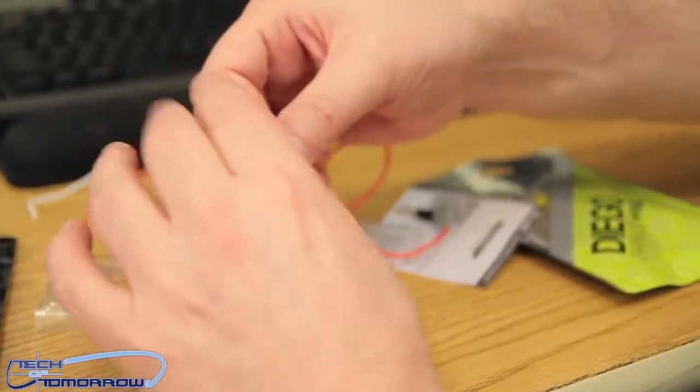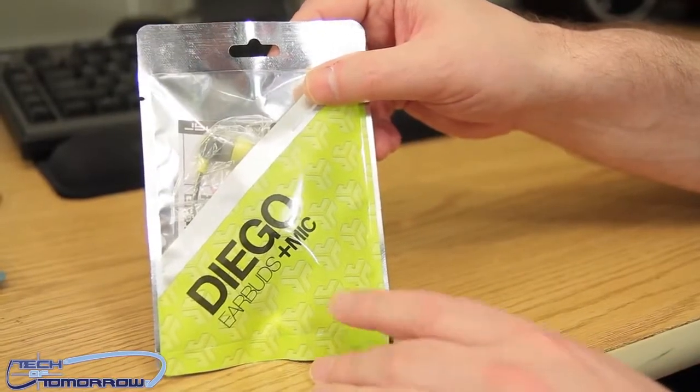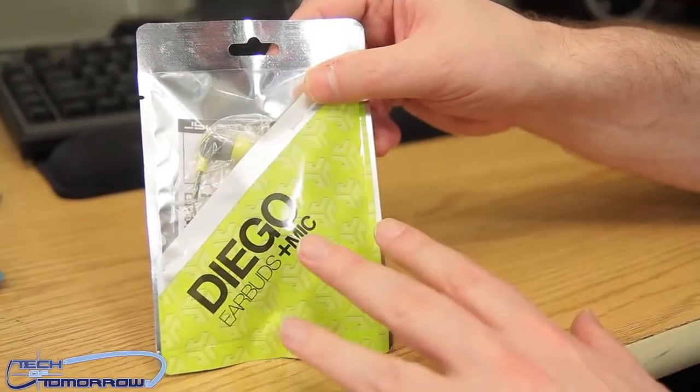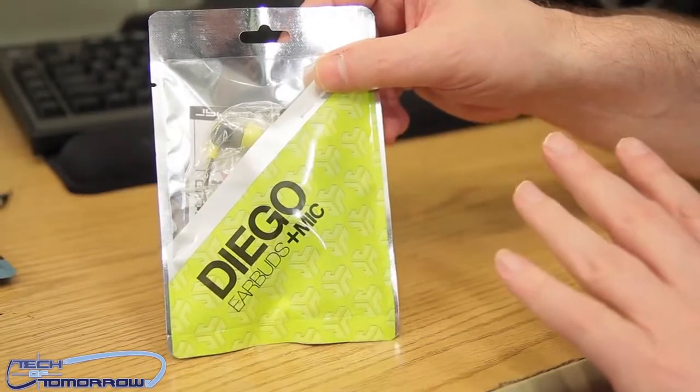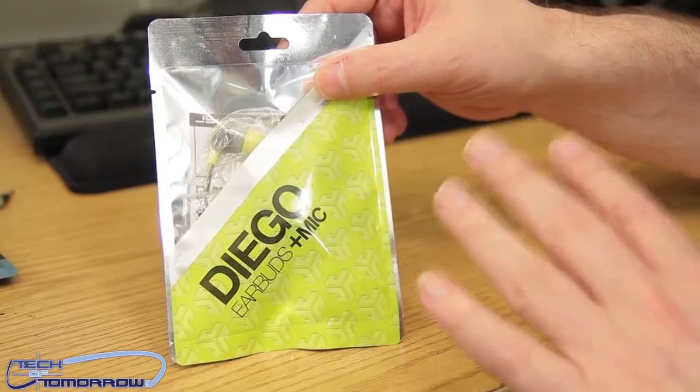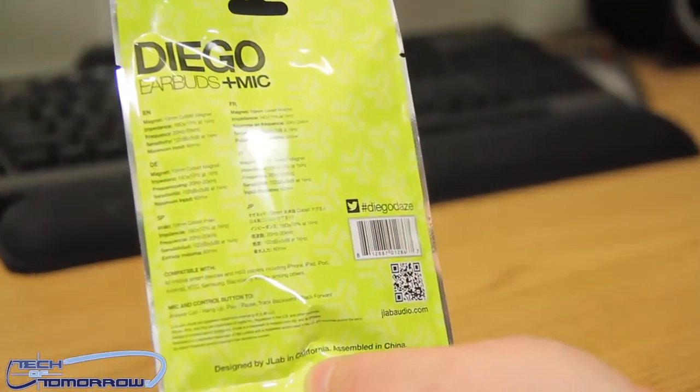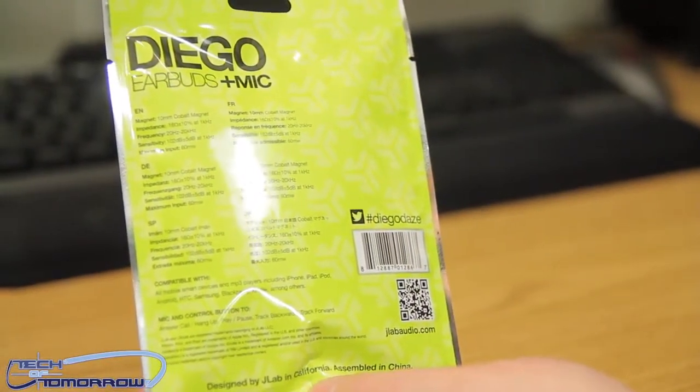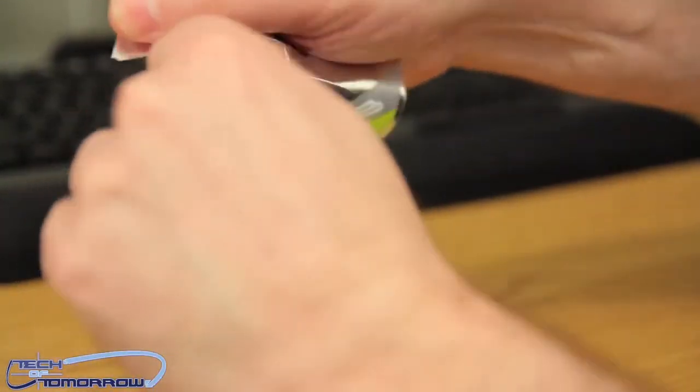Now we have the Diego earbuds plus mic. The Diego series is supposed to be geared towards the lifestyle in San Diego, so they have a lot of different color themes that relate to the lifestyle in San Diego. Here's the front, here's the back. Not much to it, just says Diego Days, which is kind of their little motto. I'll go ahead and take the little package here, rip it but not all the way, leaving the tab on.